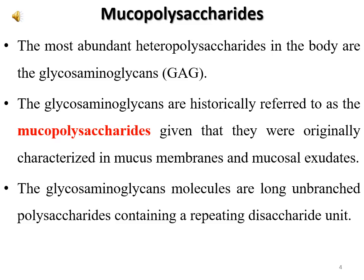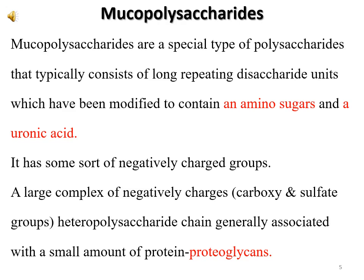The most abundant heteropolysaccharides in the body are glycosaminoglycans, abbreviated as GAG. Glycosaminoglycans are historically referred to as mucopolysaccharides, given that they were originally characterized in mucous membranes and mucosal exudates. These molecules are long, linear, unbranched polysaccharides containing a repeating disaccharide unit. They typically contain an amino sugar and a uronic acid, and possess negatively charged groups such as carboxyl and sulfate groups.